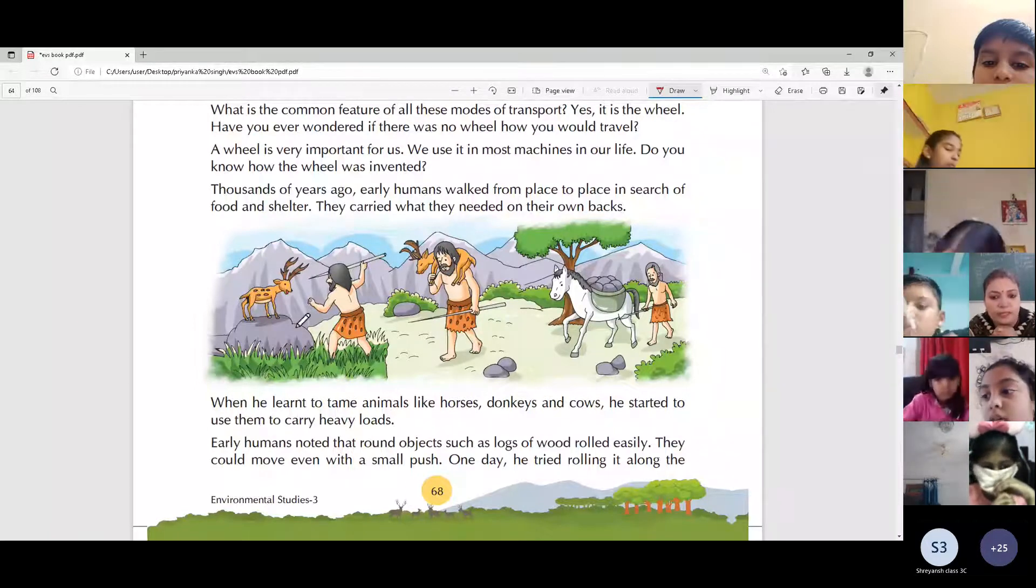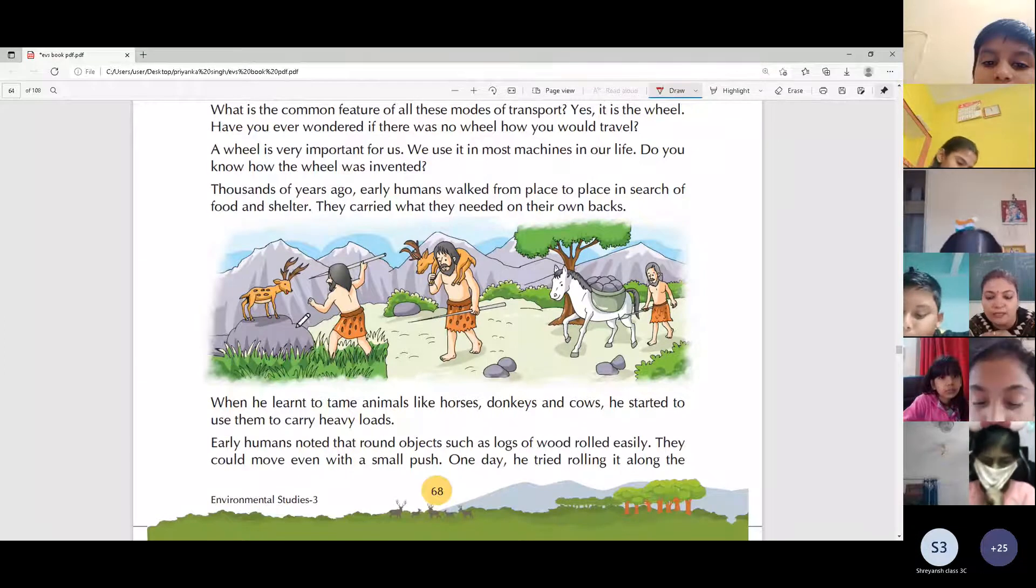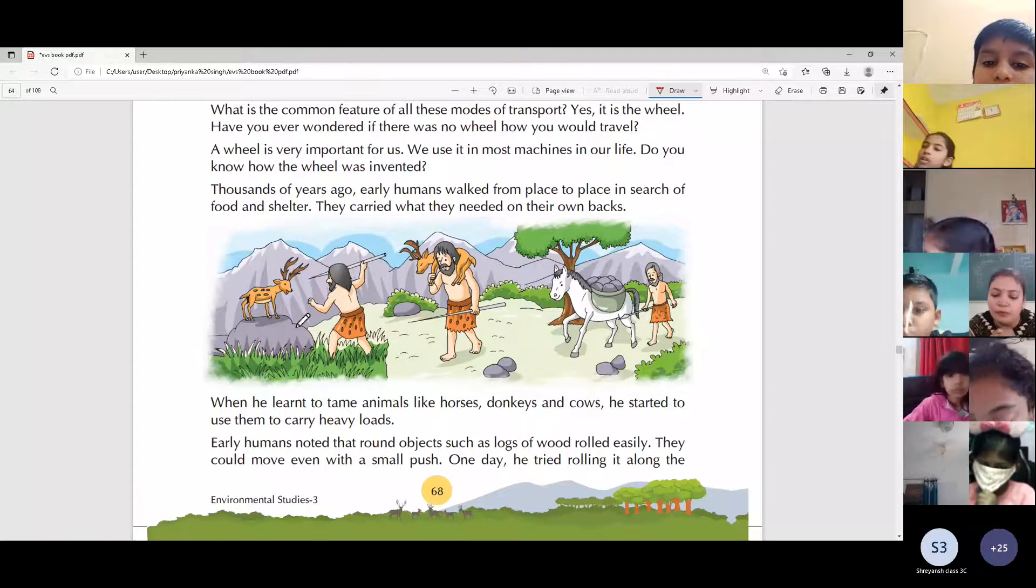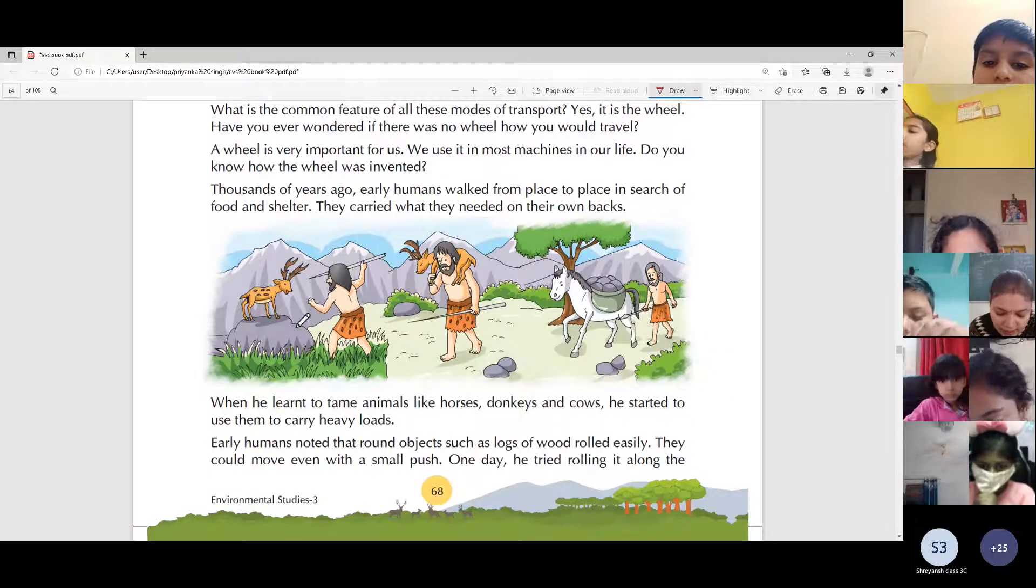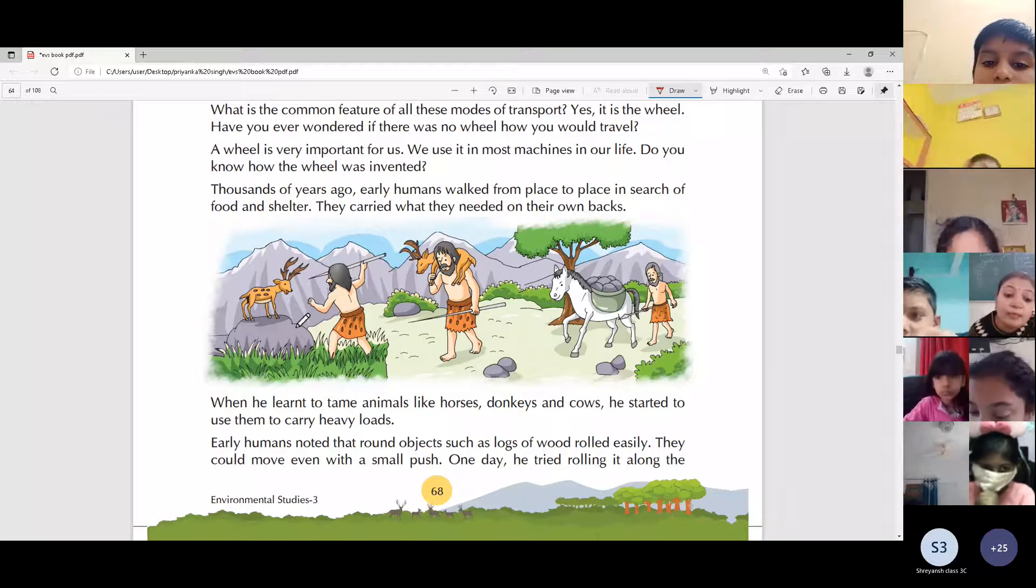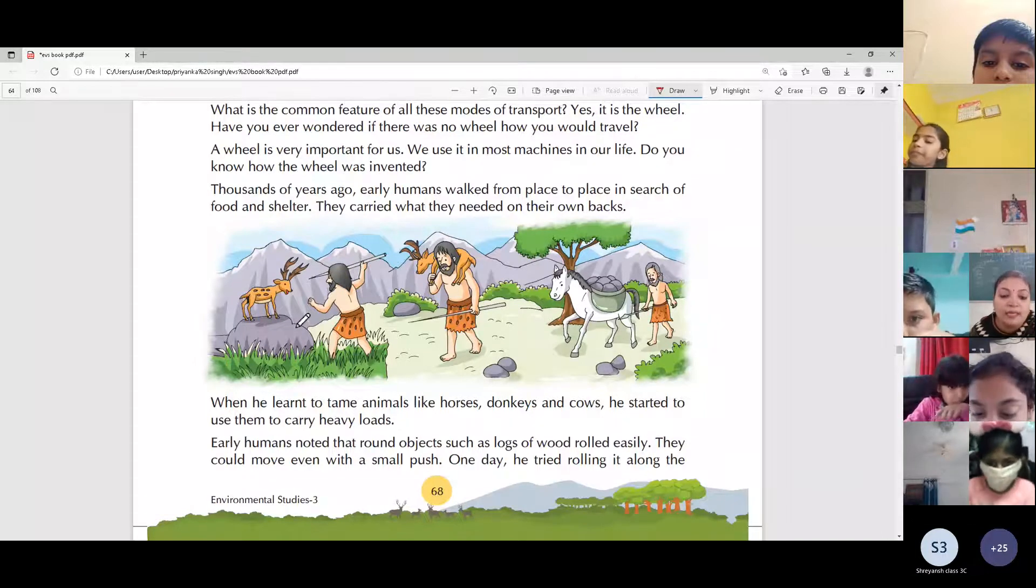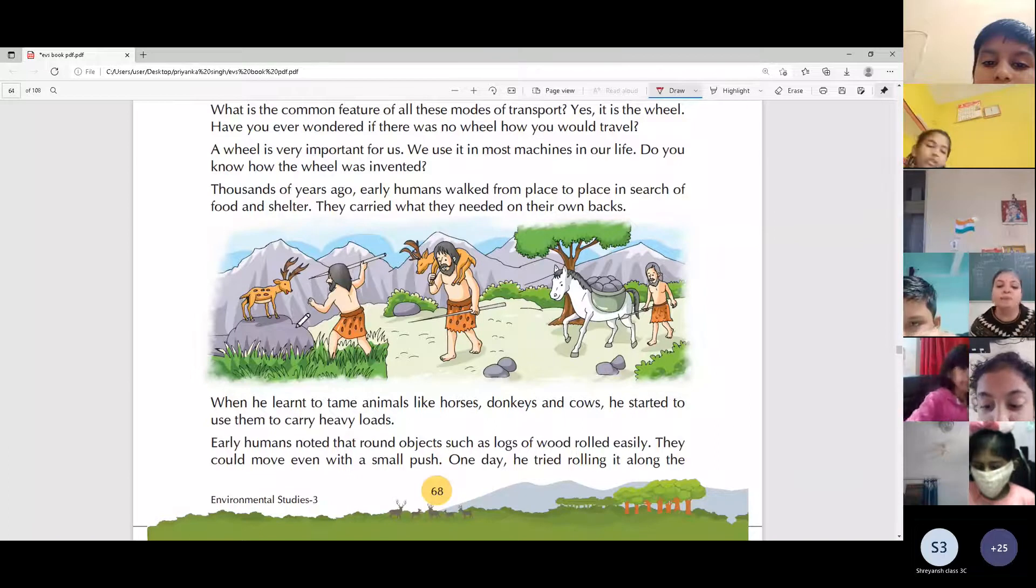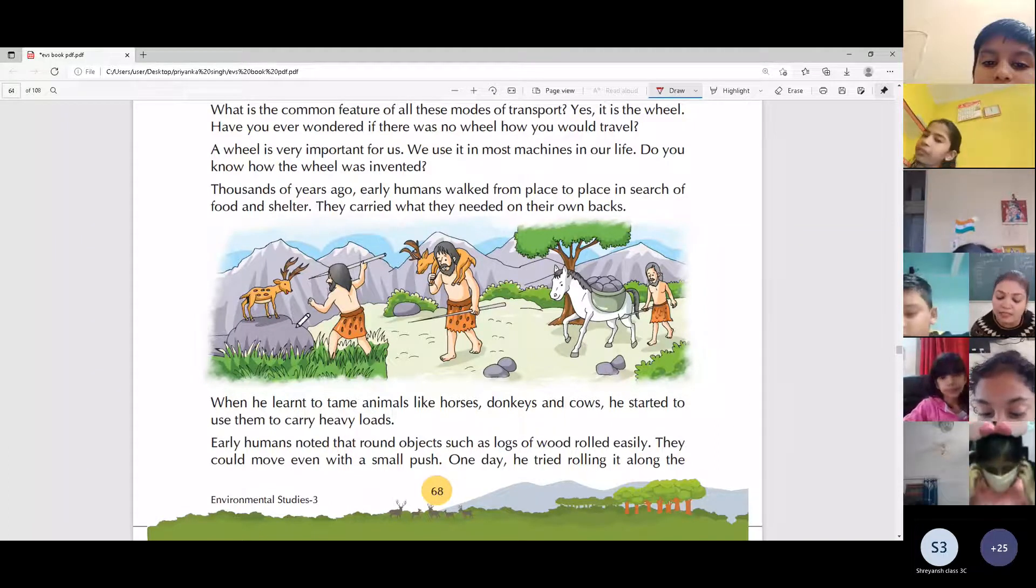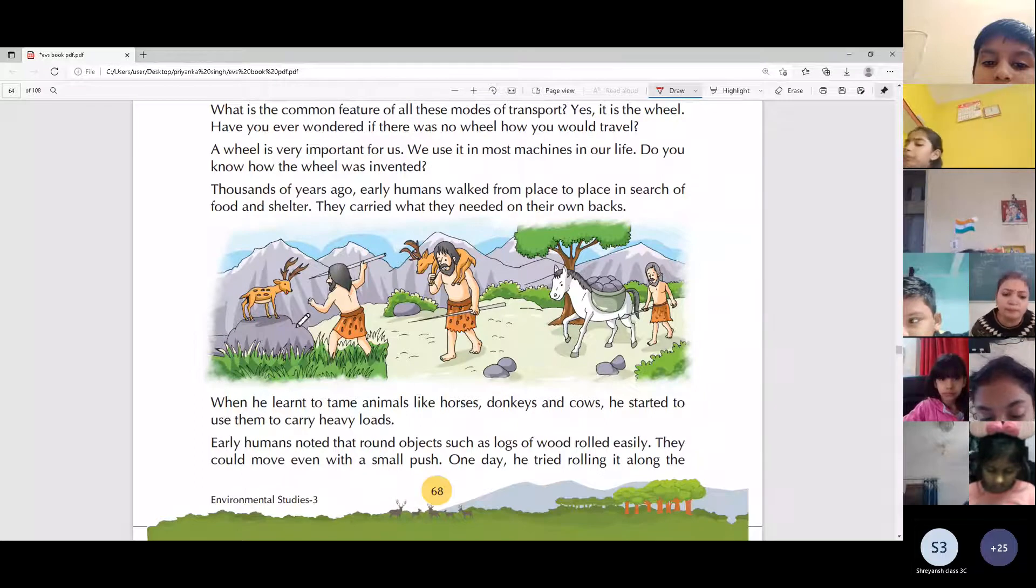Thousands of years ago, early humans walked from place to place in search of food and shelter. They carried what they needed on their own backs. Thousands of years ago, when you and us were not, in the past there was no existence of us. At that time there were early humans, who were our ancestors. They are the ones that came from previous generations, and we become the next generation in the life cycle.